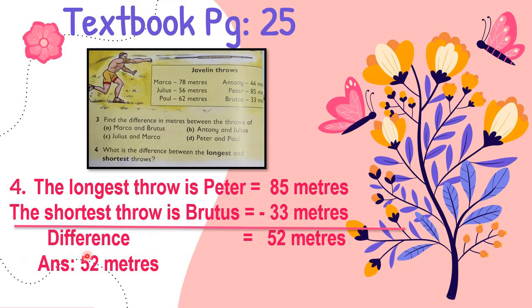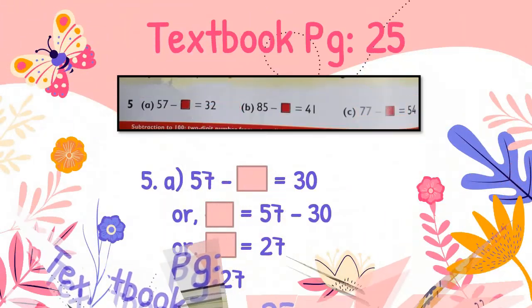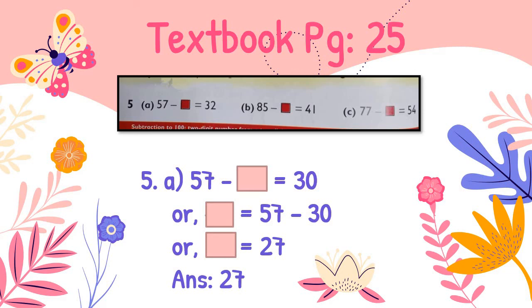The difference between the longest and shortest throw is 52 meters. In question number 5, there are fill-in-the-blank problems. Number A: 57 minus the blank box equals 30. If the box is placed after the minus sign, you need to find what number is subtracted.